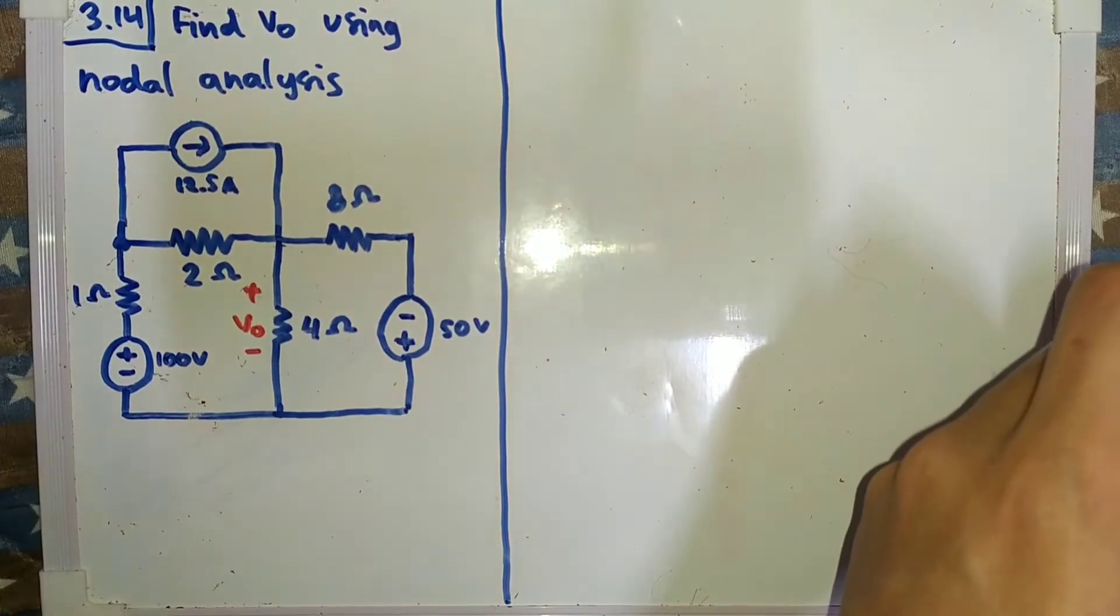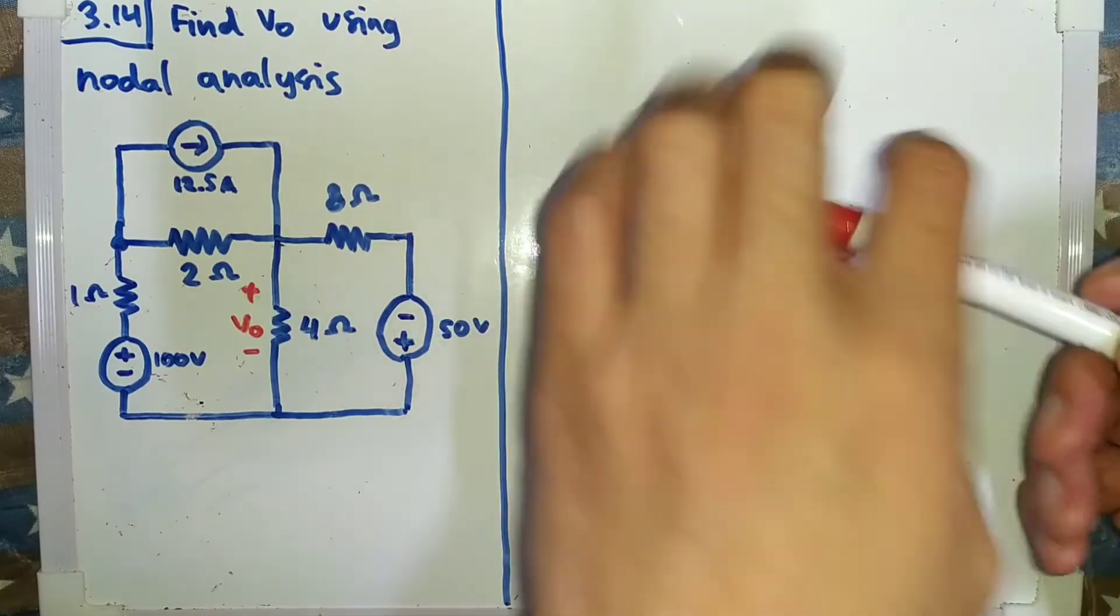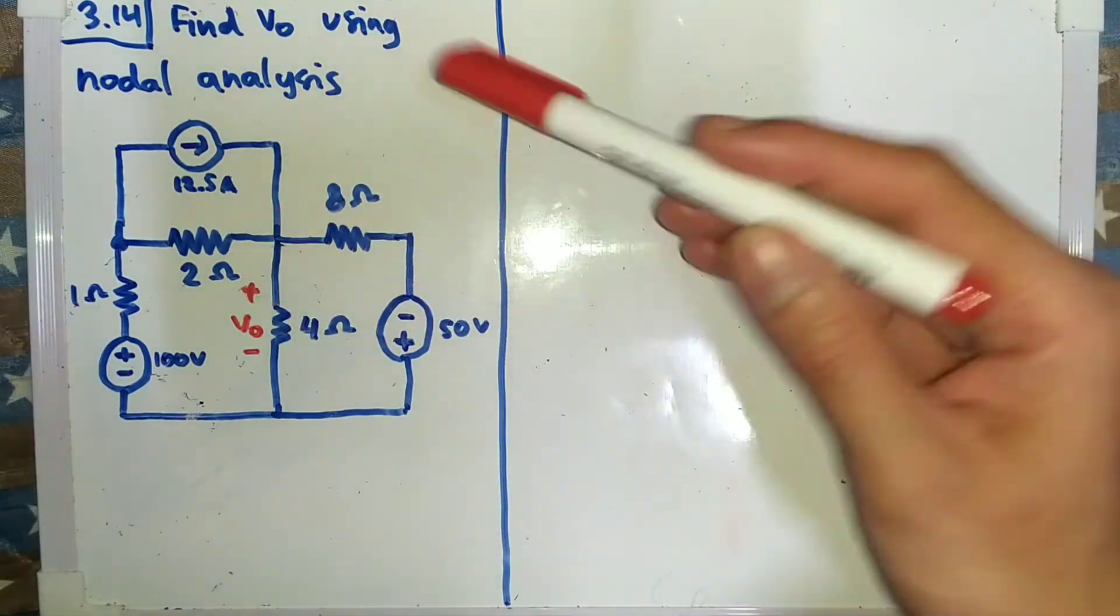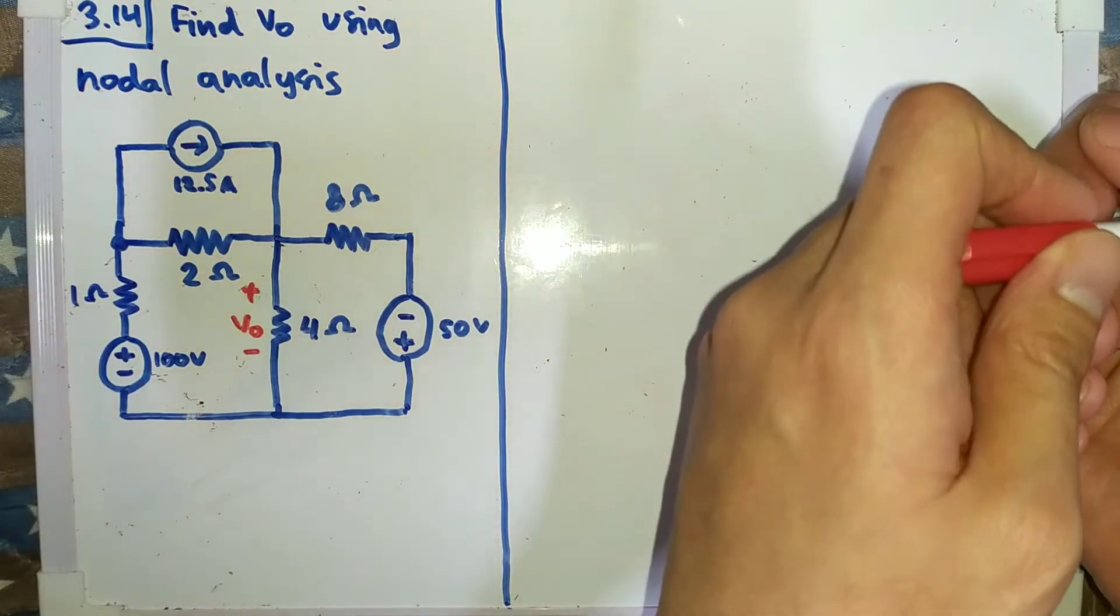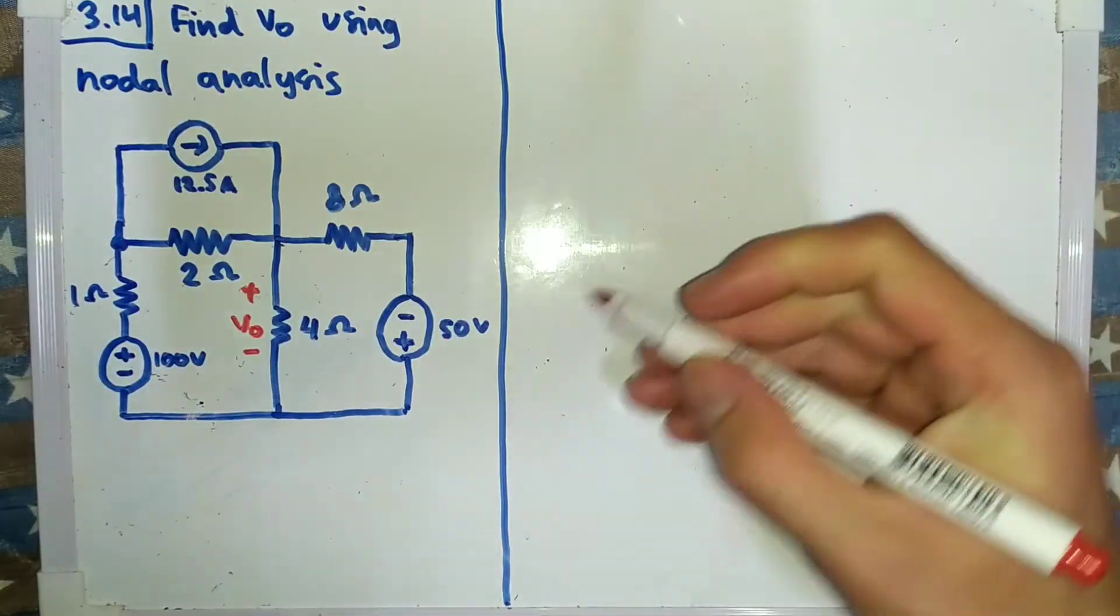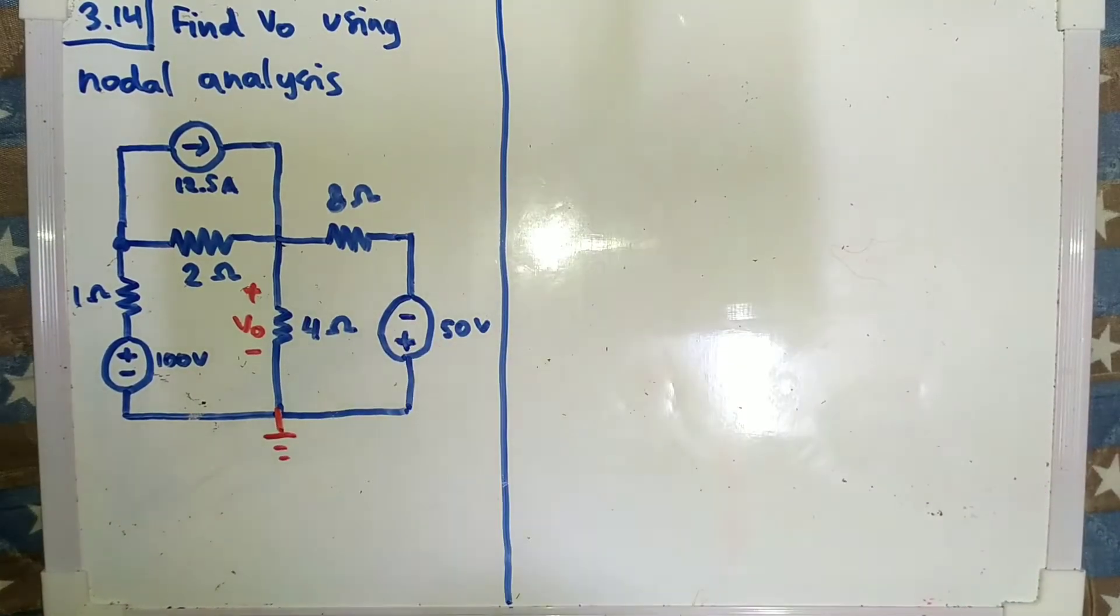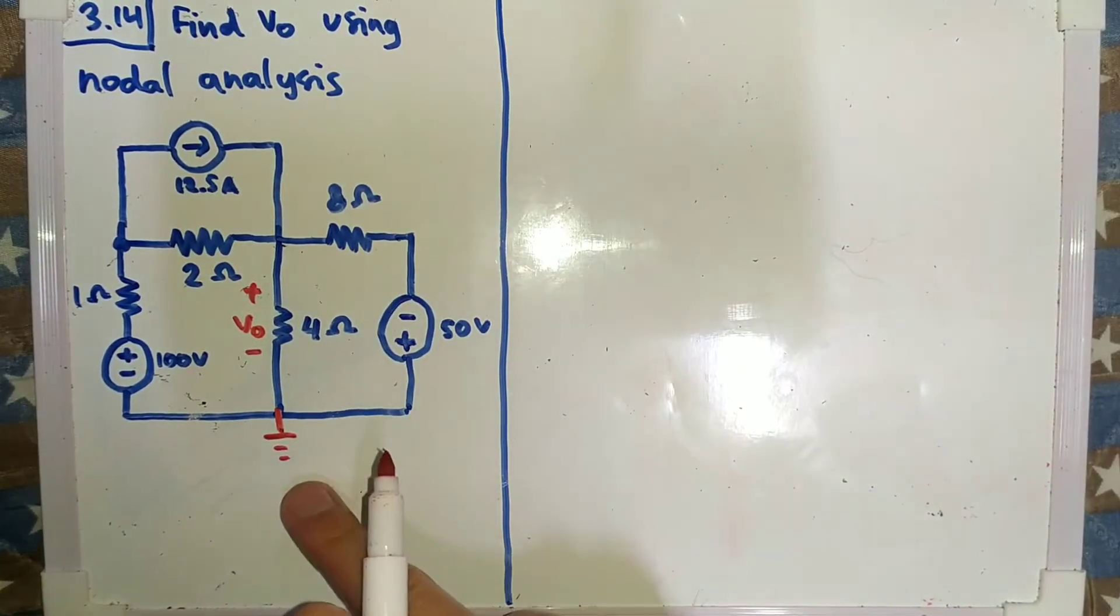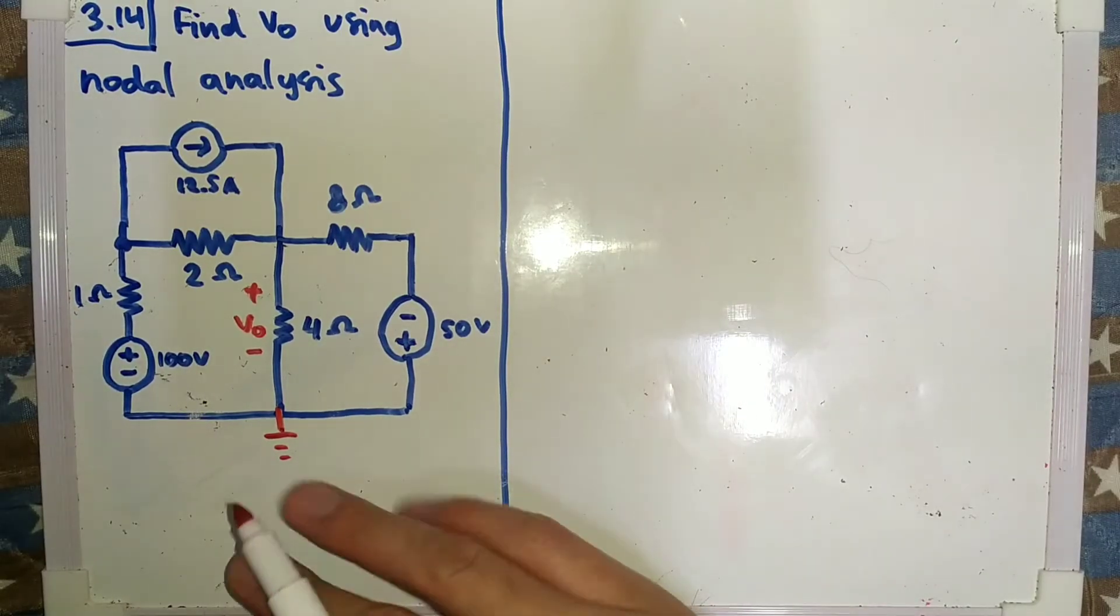We are going to solve problem 3.14 from Sadiq book. The question is find V0 using nodal analysis. V0 is here and I will set the ground first. The ground is always at the bottom of the circuit, so it makes things easier.